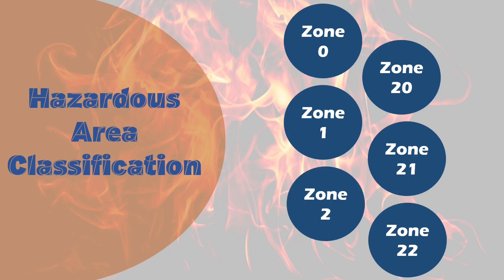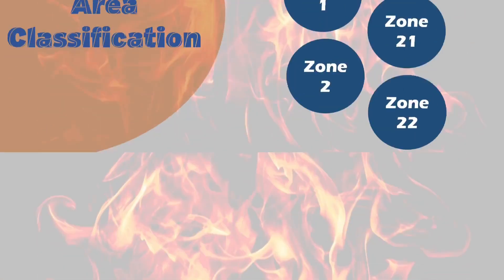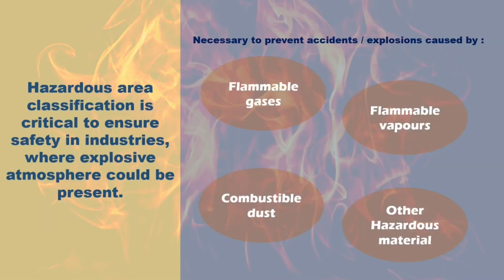Hello and welcome to Eclectic Classes. In this video we will learn about hazardous area classification. Hazardous area classification plays a vital role in ensuring safety in industries where explosive atmospheres can potentially occur. This classification is necessary to prevent accidents and explosions caused by the presence of flammable gases, vapors, combustible dust, or other hazardous materials. Let's explore this concept in detail, listing and learning the different zones with practical examples.